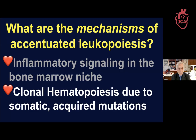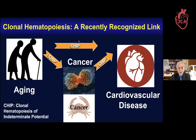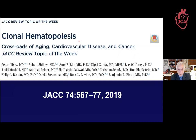Another way in which myeloid cell accumulation can increase is through clonal hematopoiesis, due to somatic or acquired mutations. This is a brand new field linking aging, cancer, and cardiovascular disease. Hematopoietic stem cells can acquire somatic mutations in a subset of known leukemia driver genes that favor expansion of clones of mutant cells, which can accumulate in peripheral blood — a first step on the road to leukemia.